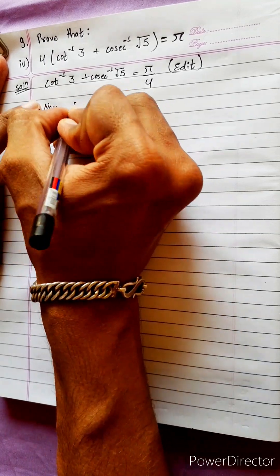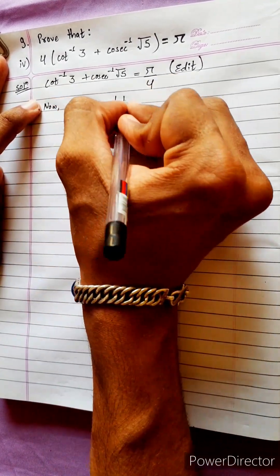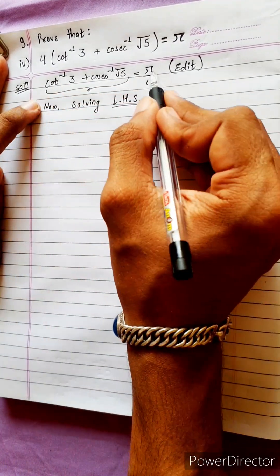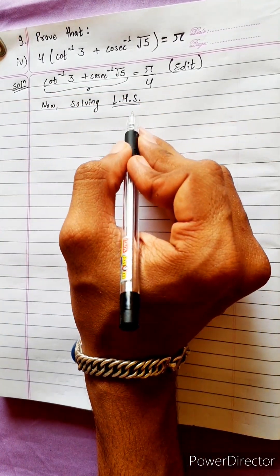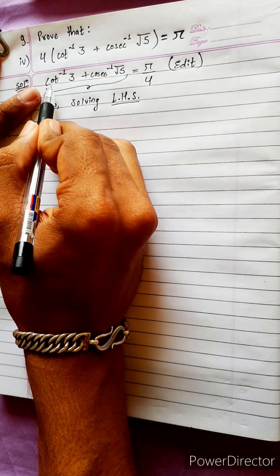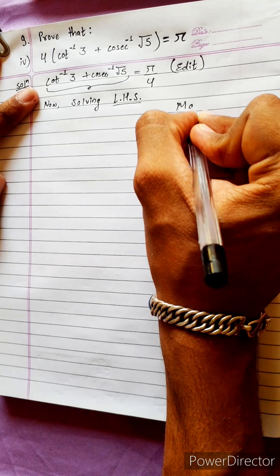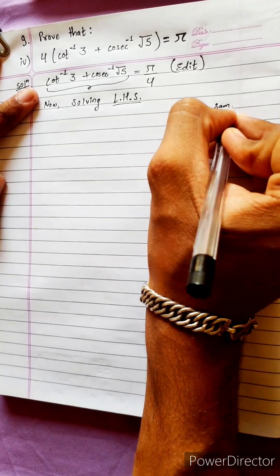Now, solving left-hand side, LHS. This is pi by 4. Now we need to make the same.